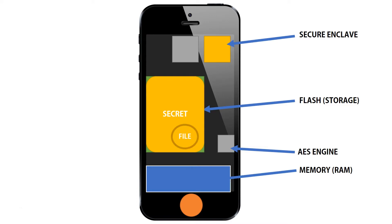How does a phone keep your files encrypted? How does it decrypt them without hackers getting in? The AES engine handles encryption and decryption in real time. The reason there's a specialized chip for encryption and decryption is to take that processing load off of the main processor.